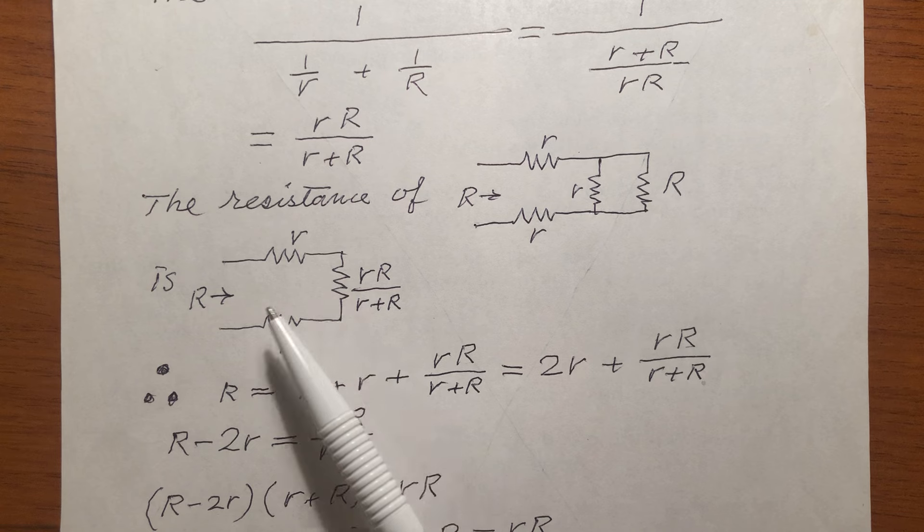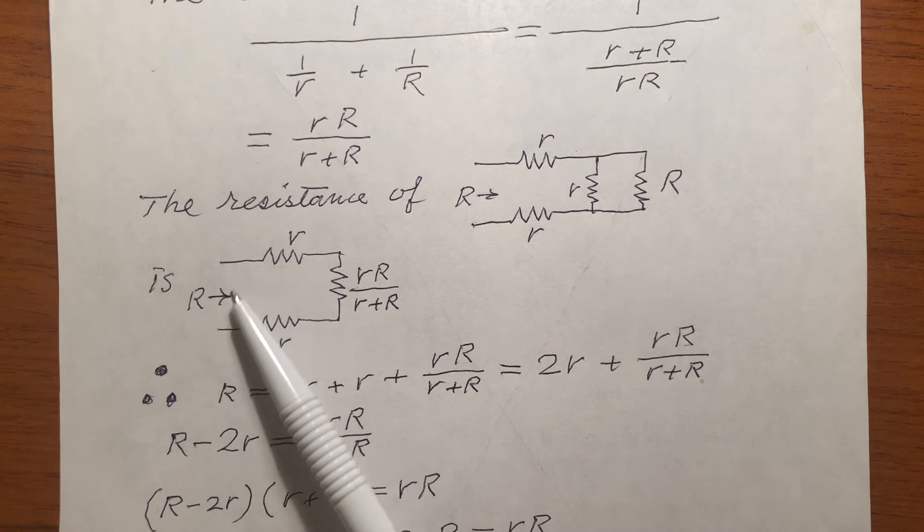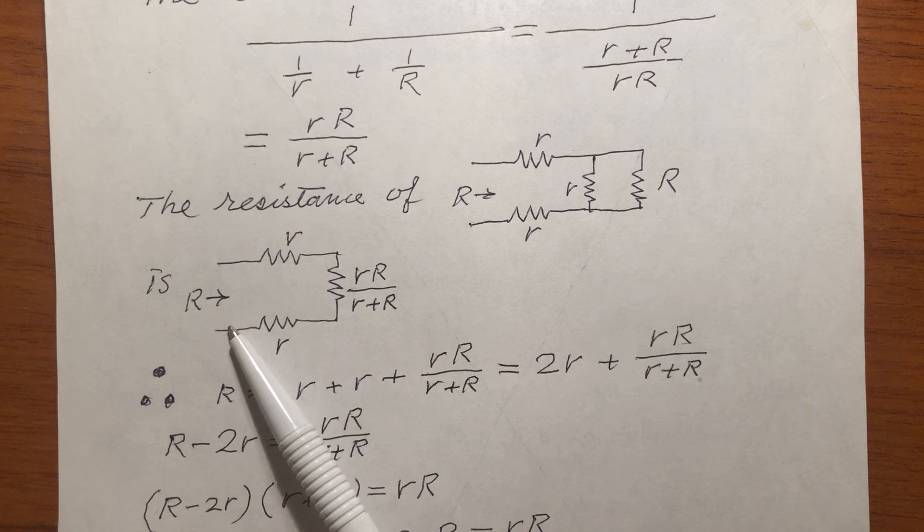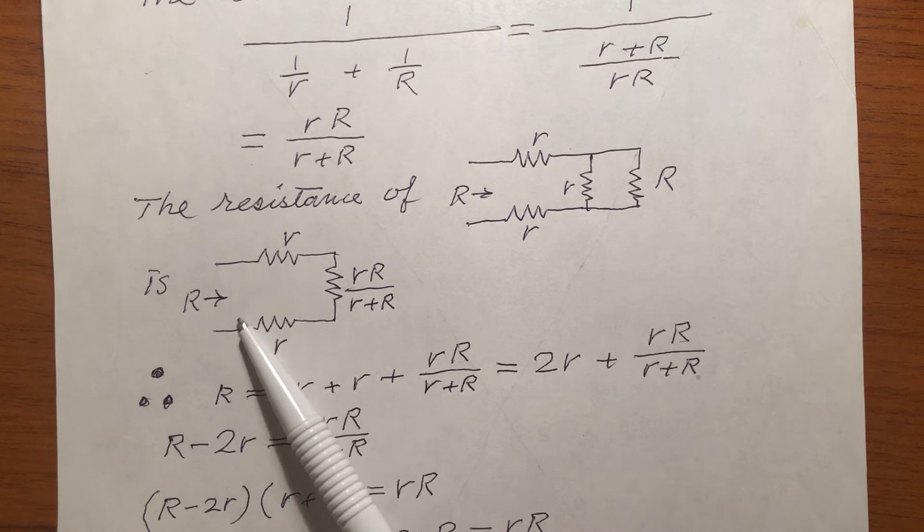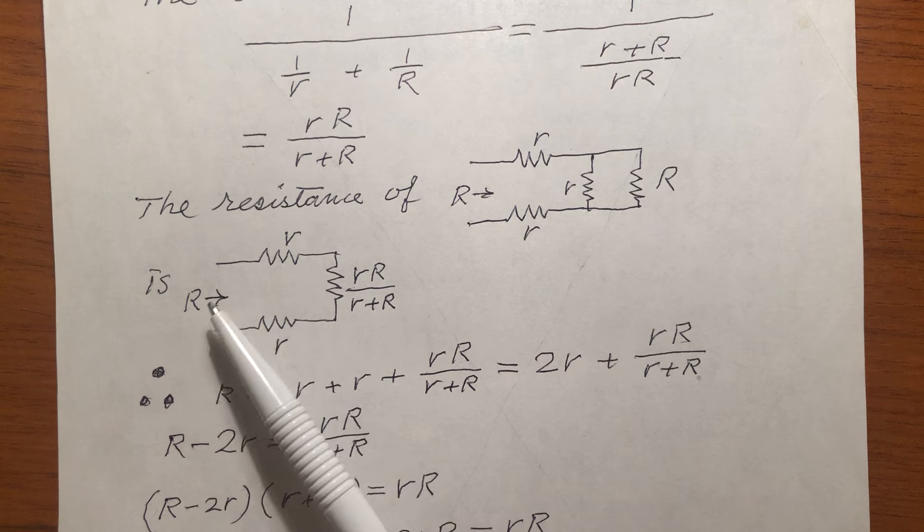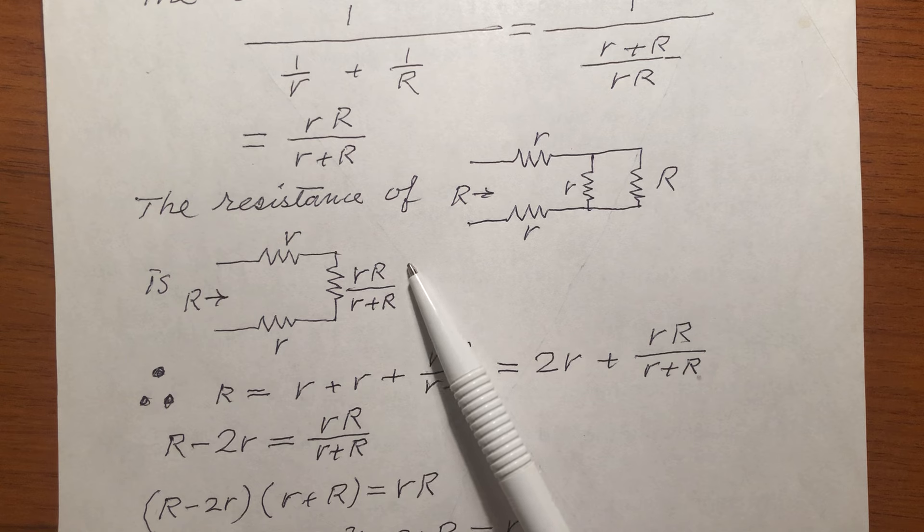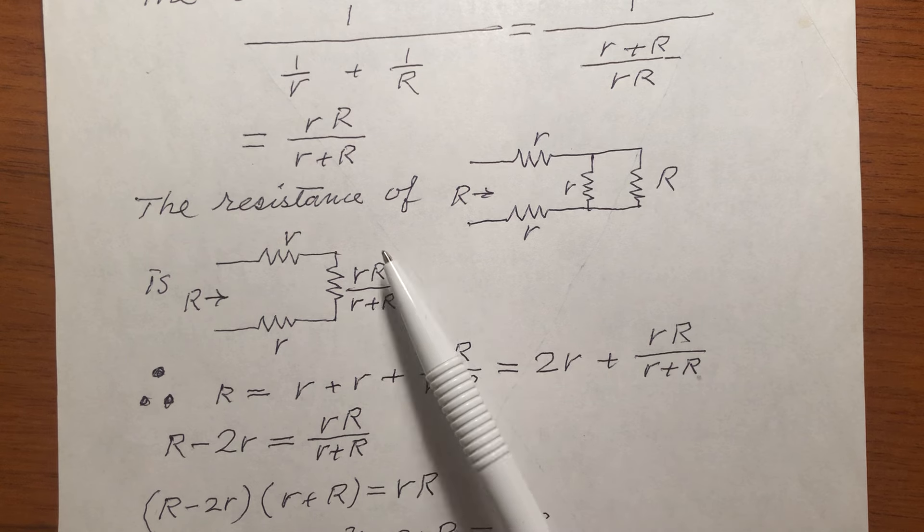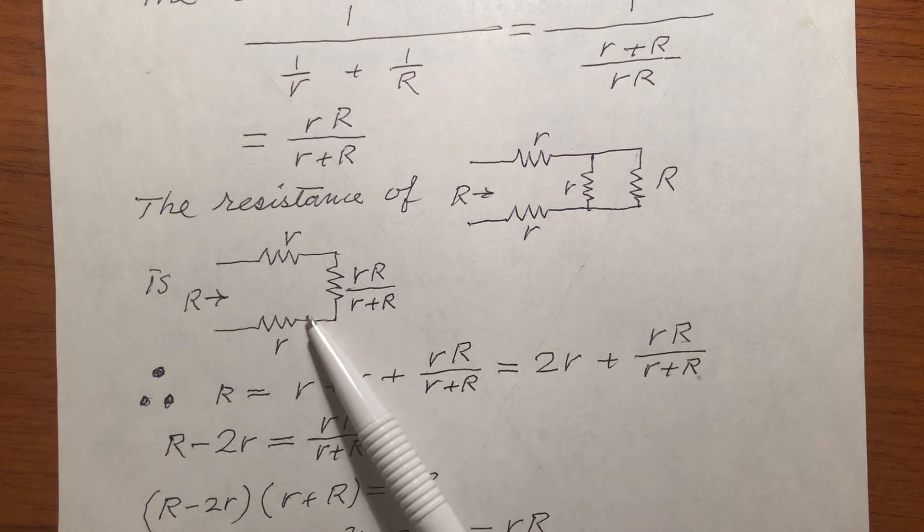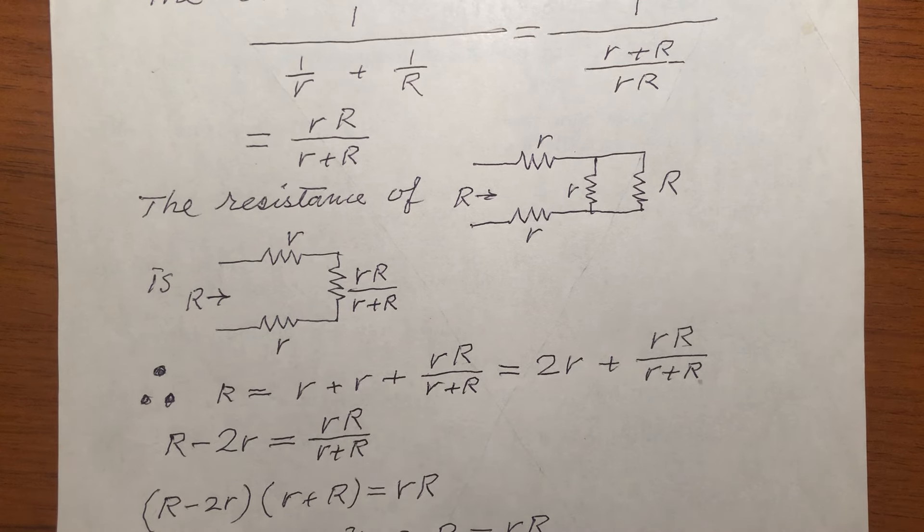But remember, the input terminal, these two terminals, the equivalent resistance between these two terminals is just capital R. So, the capital R is equal to this small r, this equivalent resistance, and this small r, these three resistors in series.